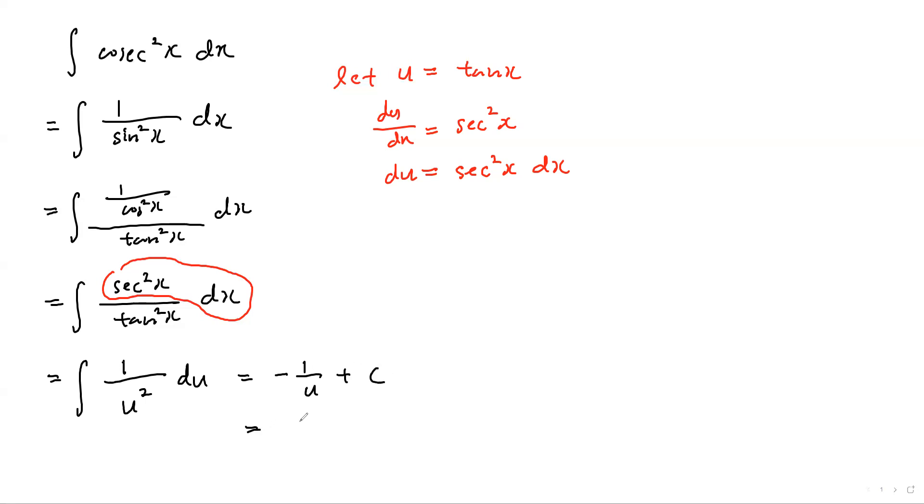Remember to substitute back. u is tangent-x. Earlier we let u be tangent-x, so this is negative 1 over tangent-x plus c. You could also write it as negative cotangent-x plus c.